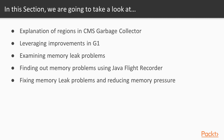First, we'll do an explanation of regions in the CMS garbage collector. Next, we'll be leveraging improvements in G1. We'll examine memory leak problems, finding them using Java Flight Recorder — starting a file recording and capturing that information. Finally, we'll fix the memory leak problem and reduce memory pressure using different approaches.